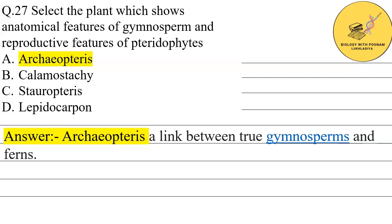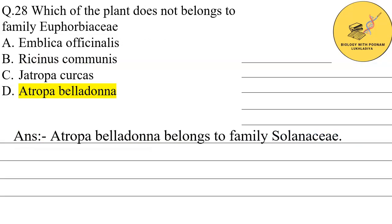The question is: select the plant which shows anatomical features of the gymnosperm and reproductive features of the pteridophyte. The correct answer is Archaeopteryx, because Archaeopteryx is the only option that shows a link between true gymnosperm and pteridophyte.